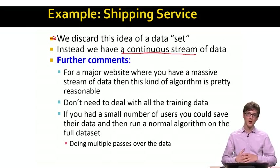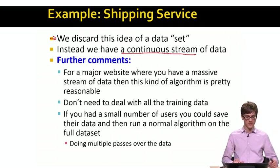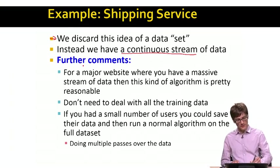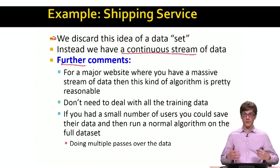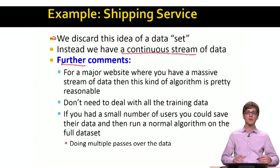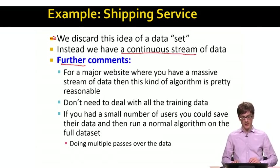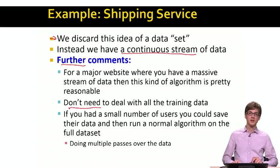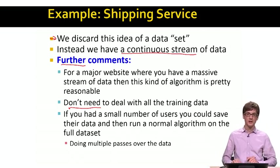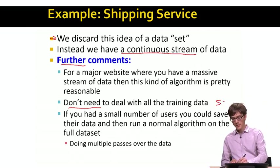When I say correctly classified, it means did we suggest a price the user was happy with, or did we choose the wrong price? On a major website we would have a massive stream of data, and as more data comes in, our model gets better and better. What is also good in this online learning setting is that all we need to do is look at one example at a time, so we don't need to deal with all the training data at once — this is a benefit of stochastic gradient descent.